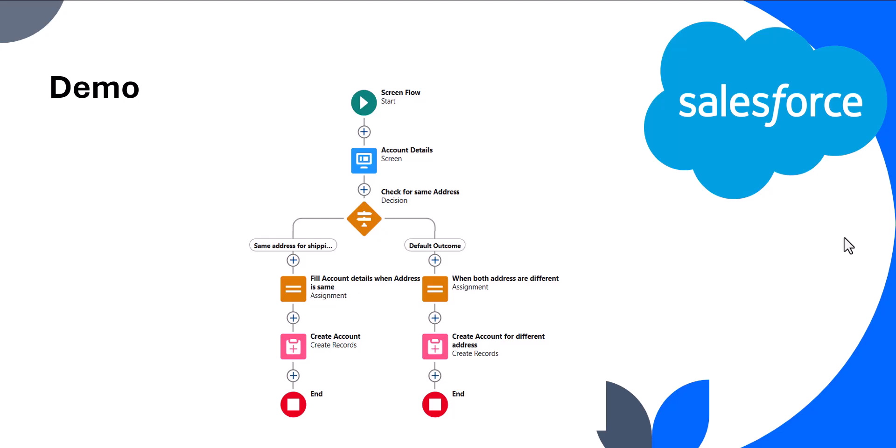Let me show you the structure of the flow we are going to create. This will be a screen flow. In the first screen we will enter the account details. Then, to decide whether both address fields are the same, we will add a decision element. If both address fields are the same, the shipping address will not appear; if they are different, both will appear on the screen flow.